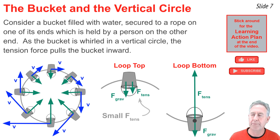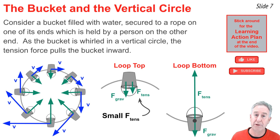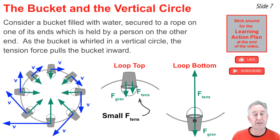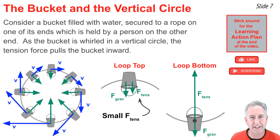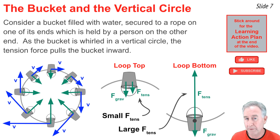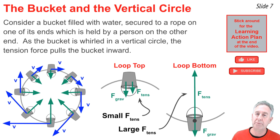At the top of the loop, tension tends to be rather small because the bucket is not moving very fast and there is not as much net inward force required, and also because gravity already supplies some of the net inward force, so tension has to provide very little of it. At the bottom of the loop, on the other hand, tension must be very great because it must overcome gravity and meet the centripetal force requirement for the bucket to continue in the circle.